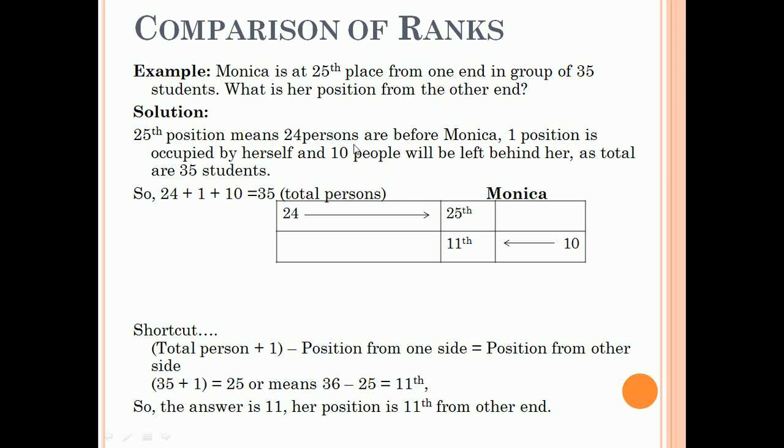So from the other side, 10 plus one herself, she is occupying the 11th place. The shortcut method can be: total persons plus one minus position from one side equals position from the other side. So here, total persons were 35 plus one, which is 36, minus 25, which means 11th. So 11th position is our answer.